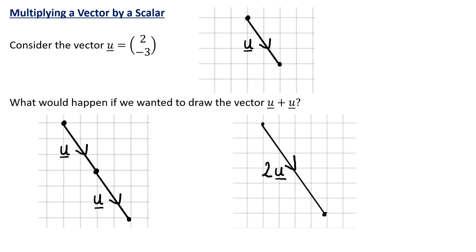But we can do some work with this because we know that u plus u is 2u. So what we've got here is the vector 2u. Let's have a look at the components of 2u. Remember we always underline our vectors. So 2u is the vector (4, -6). Hopefully you can notice that 2u is just double both the components in the vector u.